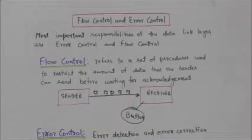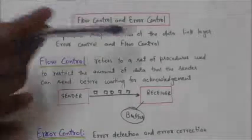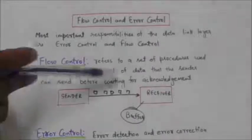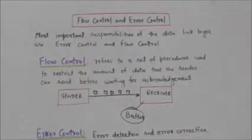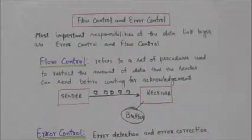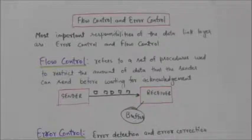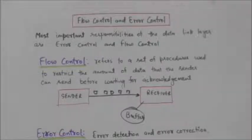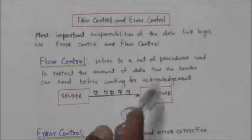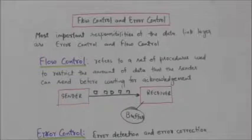Flow control refers to a set of procedures used to restrict the amount of data that the sender can send before waiting for acknowledgement. The flow of data should be such that it does not overwhelm the receiver.